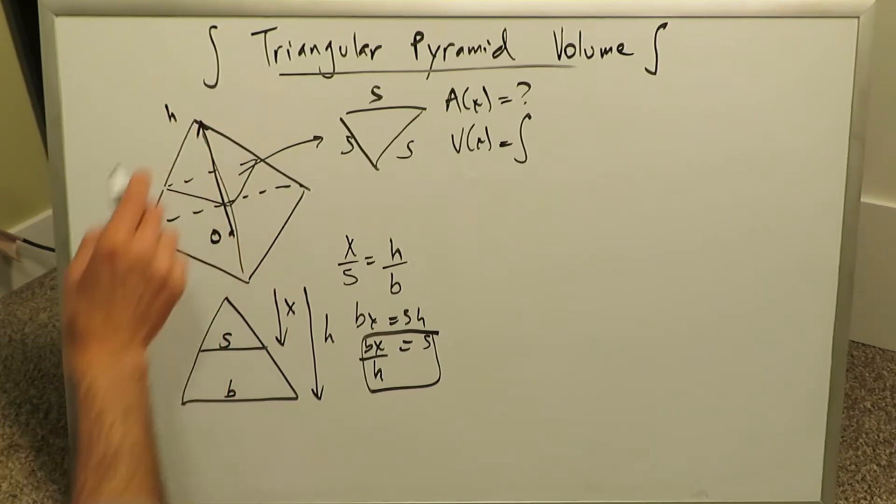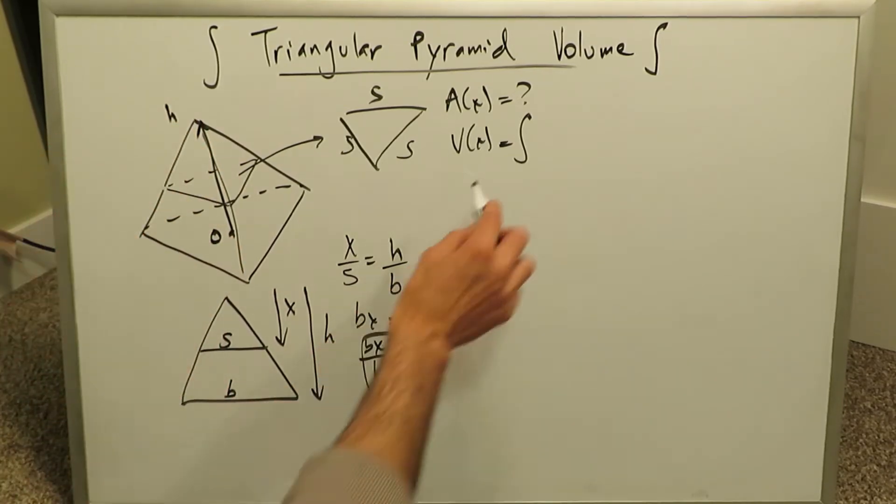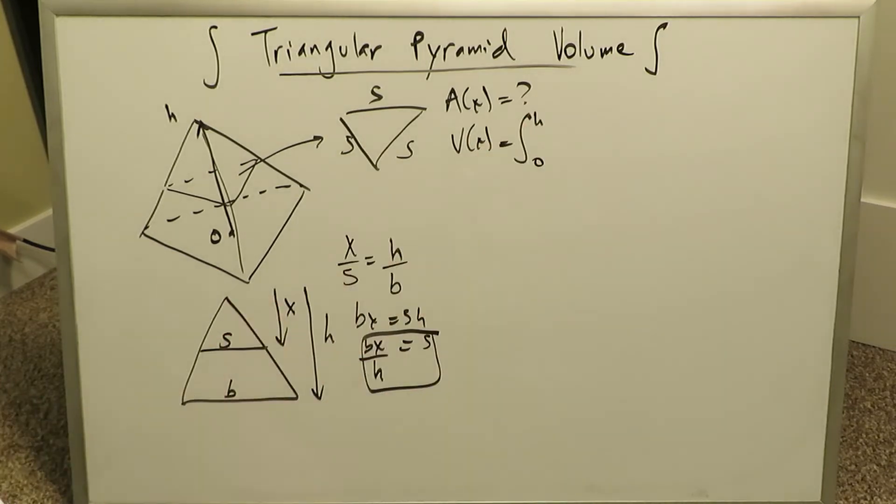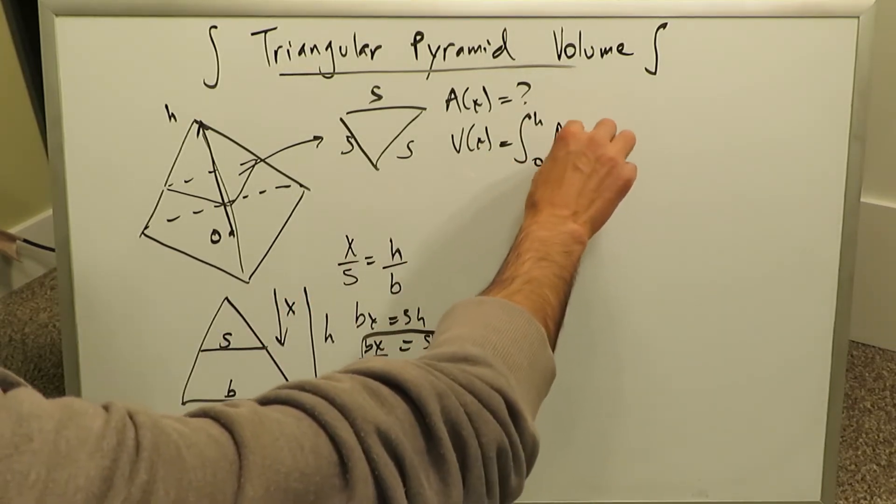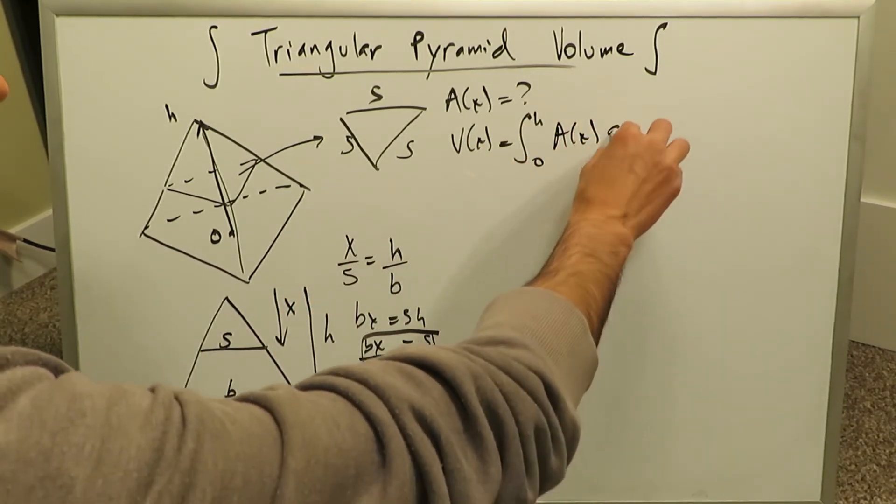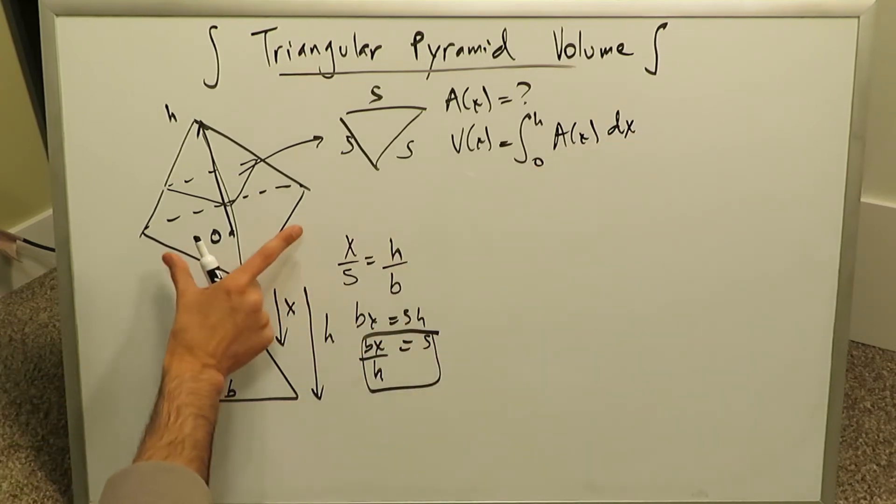We can call this 0, and we can call this H. From 0 to height, the top apex of this pyramid, and we were to integrate this area of determination, we would get the volume, the summation of all of these cross-sectional triangular slices from the base to the apex.